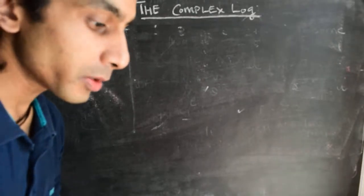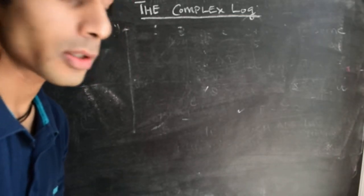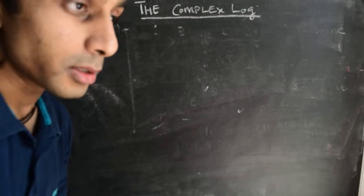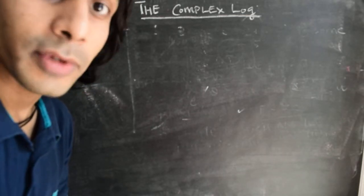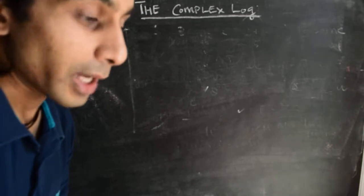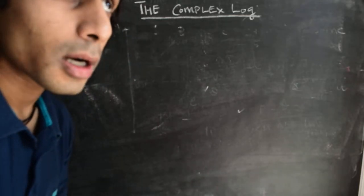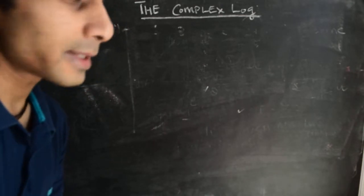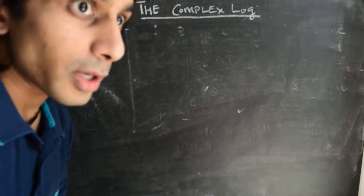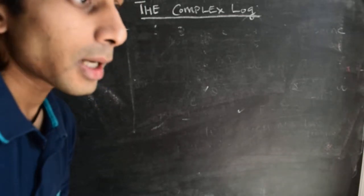Hi there and welcome back. In the previous videos we've been talking about branch points — how there could be two kinds: an algebraic and a logarithmic branch point. One example of an algebraic branch point is the function z to the power one third, or any function of the form z to the power one over n, where n is some integer. An example of a function with a logarithmic branch point is the argument function itself, which is inherently multivalued. In this video, let's extend the discussion and talk about the complex log function and see how it is also multivalued — it has a logarithmic branch point at the origin and inherits this property from the argument function itself.